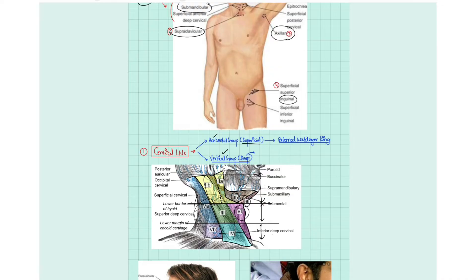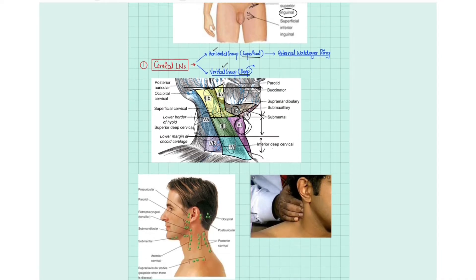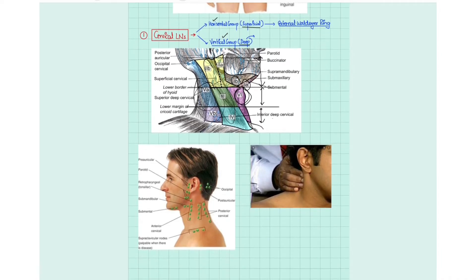Level 2 is between the base of the skull and the hyoid bone, level 3 is between the hyoid and the cricoid, and level 4 is below the cricoid. The lymph nodes within the posterior triangle are level 5, and the pretracheal and peritracheal lymph nodes are level 6.